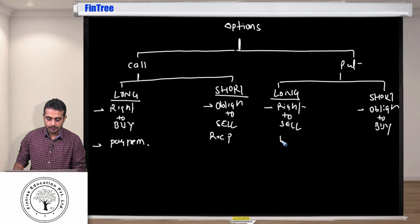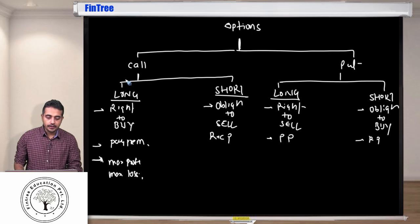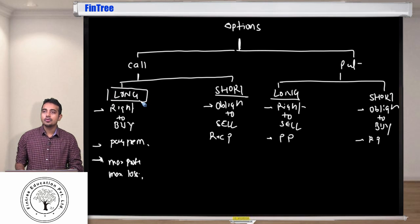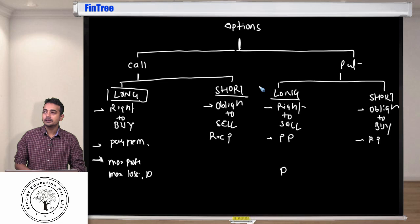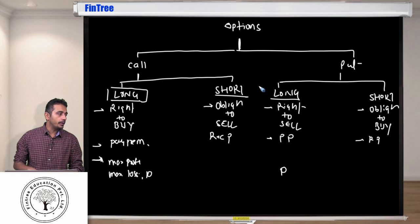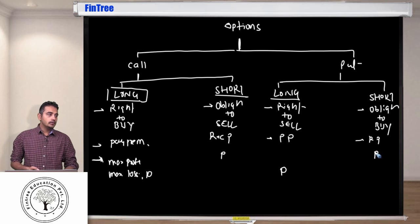If you have a right, you will have to pay a premium to get that right, and the party taking the obligation will receive the premium. Now for maximum profit and maximum loss: when you are on the long position, you're never going to lose more than the premium, so maximum loss is the premium for both long call and long put. When you're on the short position, the whole idea is to earn the premium, so the maximum profit on the short side will never exceed the premium.